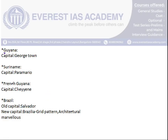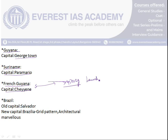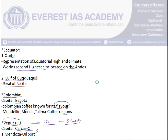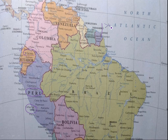The next countries are the Guianas. Guyana has its capital at Georgetown. Suriname has its capital at Paramaribo. French Guiana is notable as the place where Indian rockets exceeding 4,500 kg are launched — it is the launch site for Indian rockets exceeding 4,500 kg.